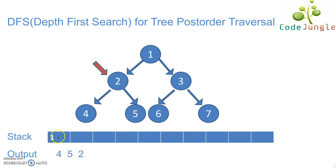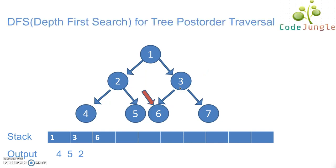The next element in the stack is one, the topmost element. Now for one, because we have already considered the left hand node, next we will consider the right hand node. So three comes into the stack. Next we will check if there is a left node for three or not — it is there, so six comes into the stack. Next we will check if there is a child node for six or not. There is no child node for six, hence six has been popped out of the stack and accumulated in the output. Next we will check for the right node of three. The right node of three is seven, hence seven comes into the stack, and then we check for the child node for seven.